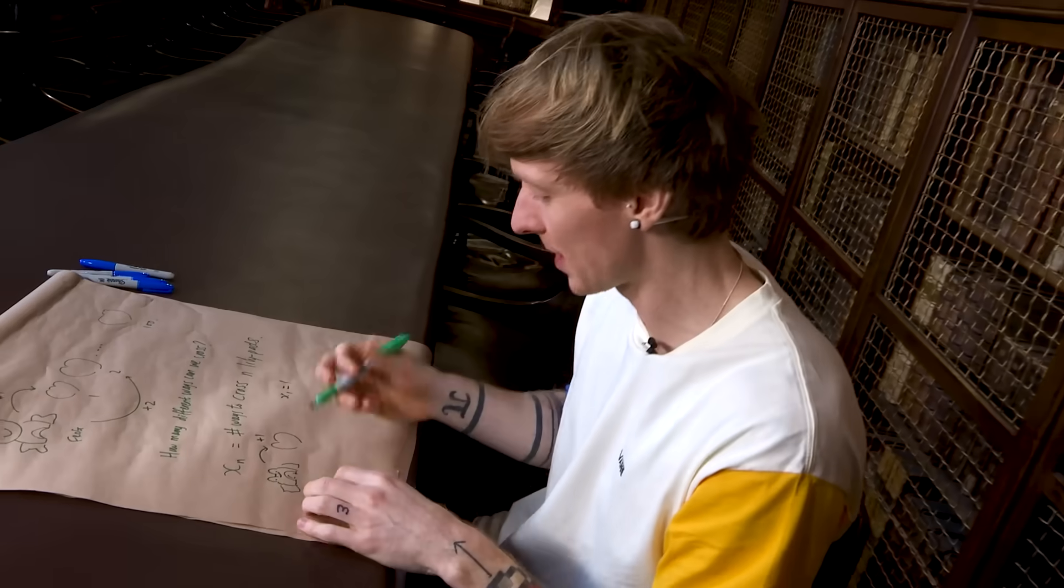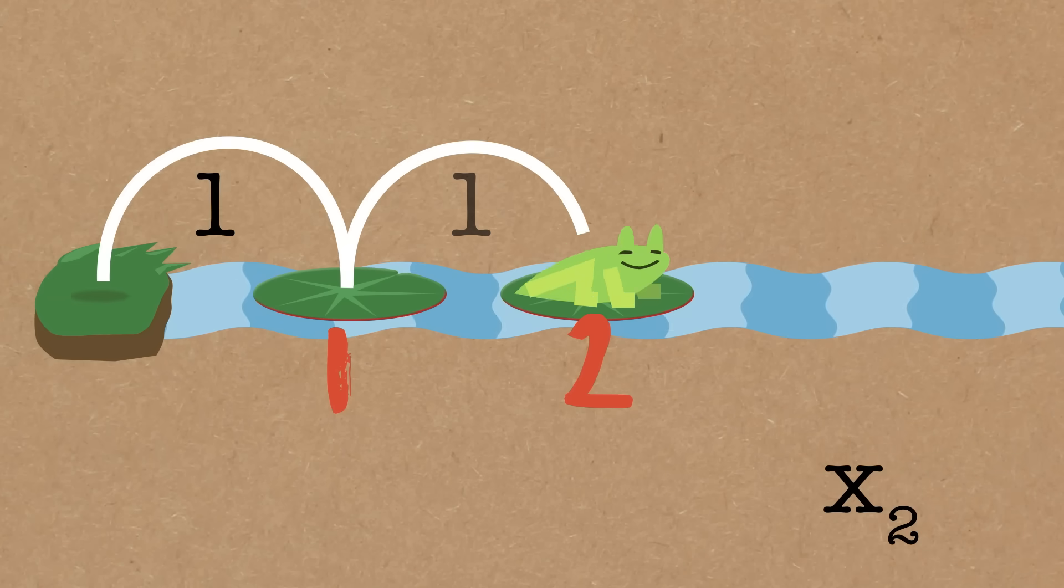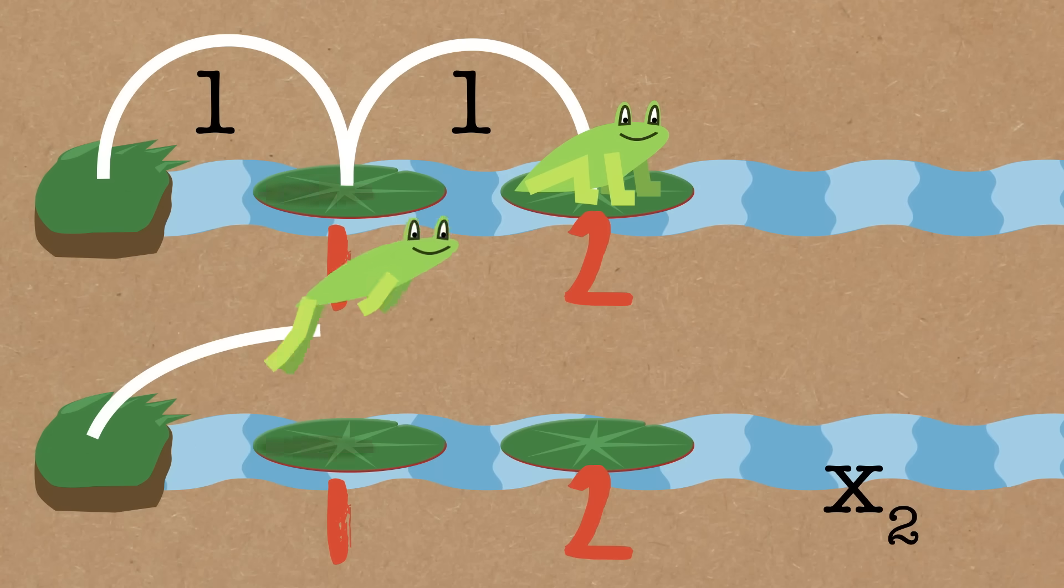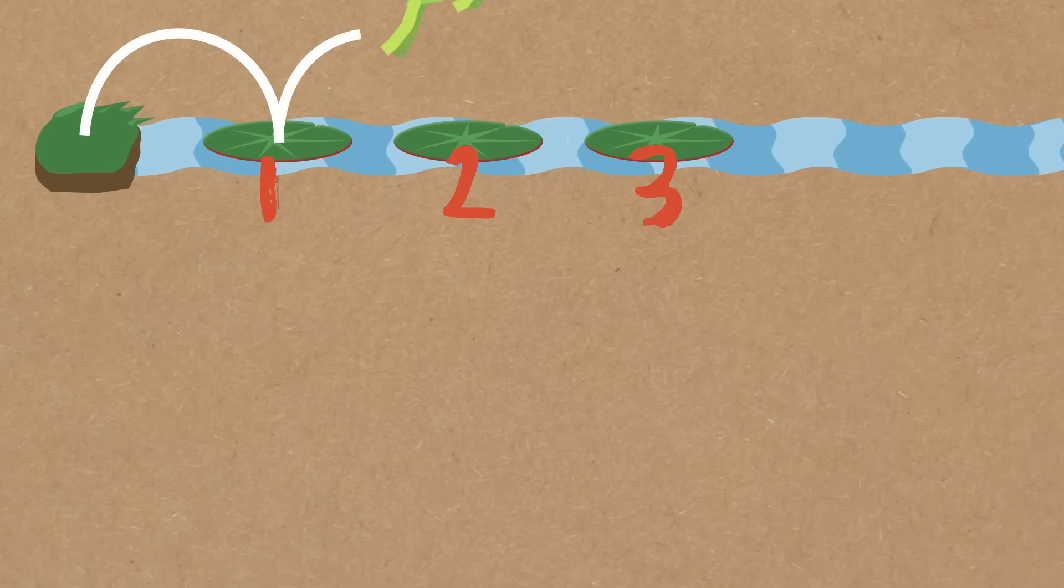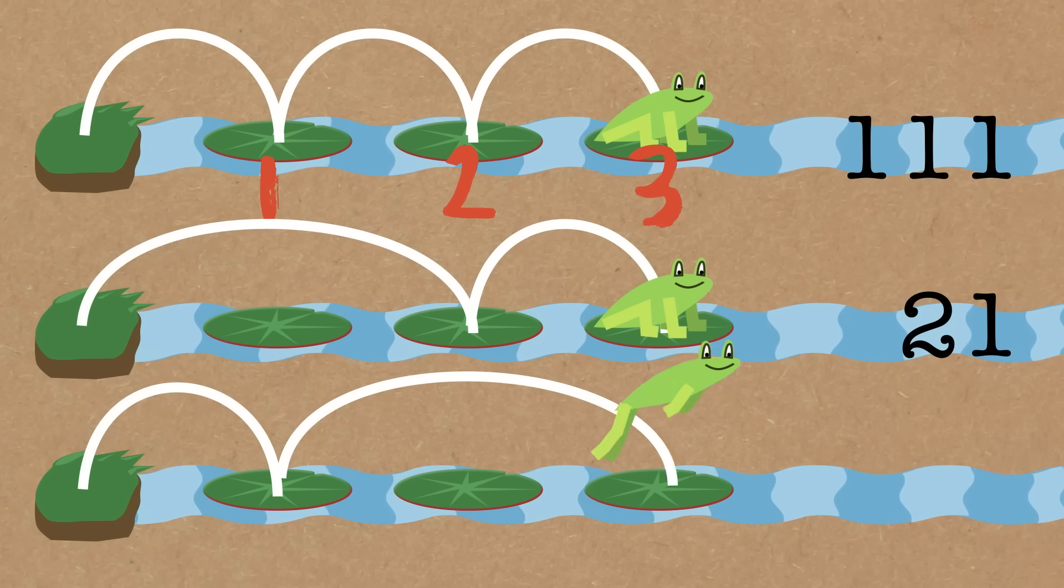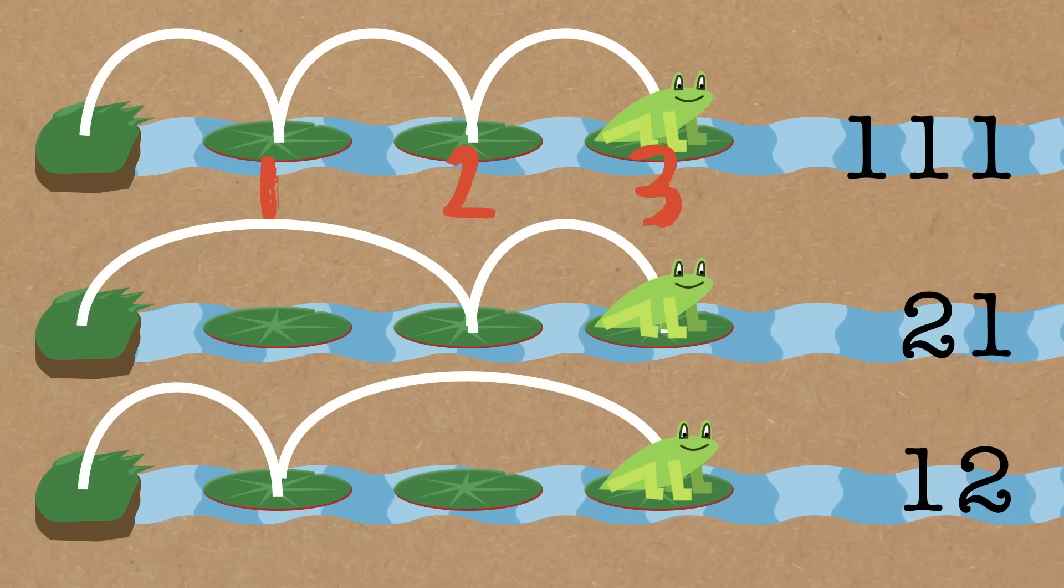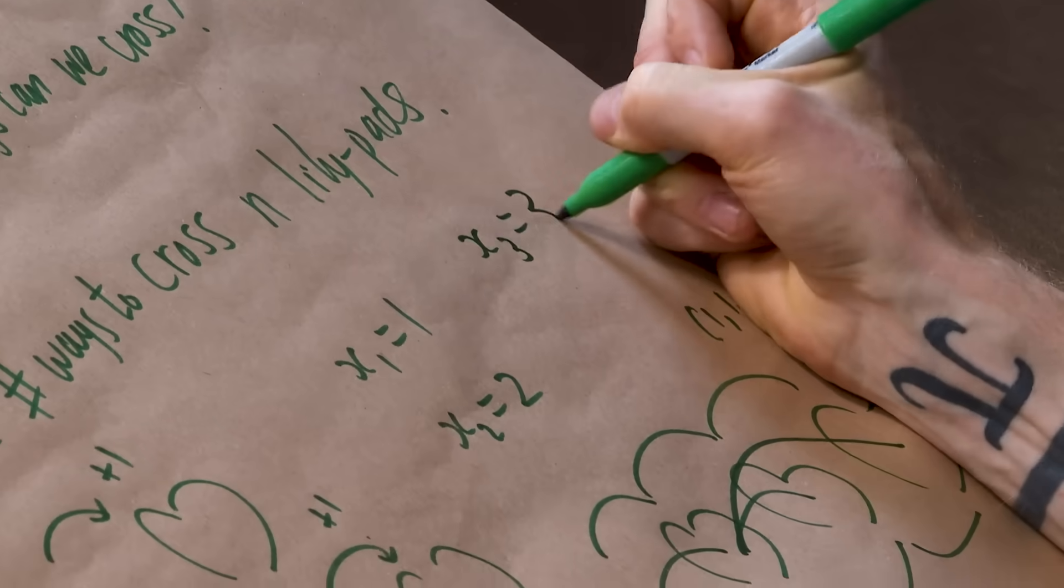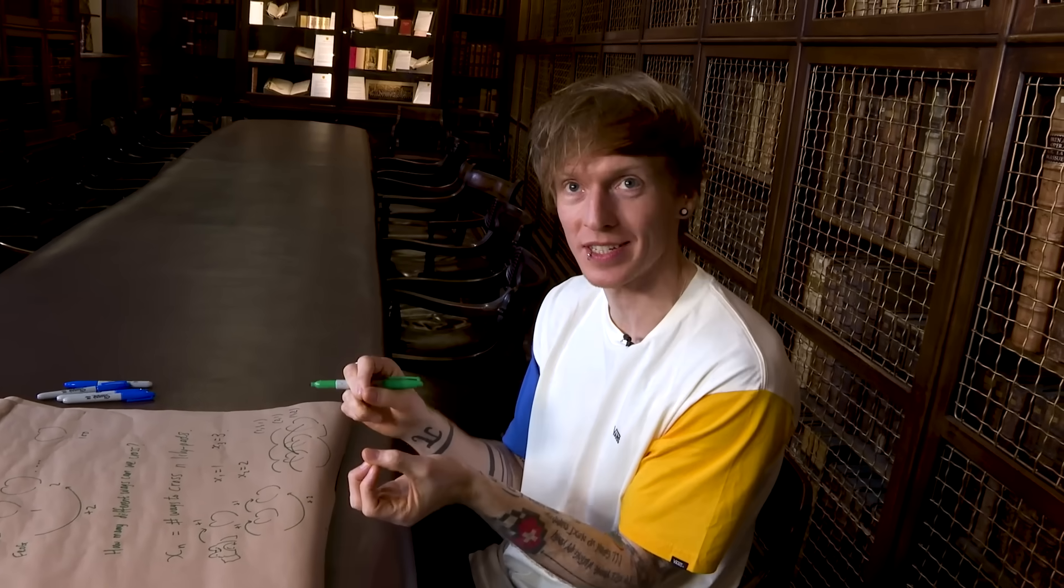Now if we have two lily pads, we could go one and then one, or we could go two. So x2 is equal to two. And then let's look at one more. If we want to do x3, we can go one, one, one. We can go two and then one. And this is where we get our first example of the order mattering because we can go one and then two. So x3 is equal to three. We could continue this way, but it's going to get harder and harder to keep track of the orderings.